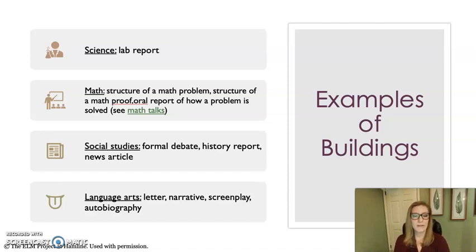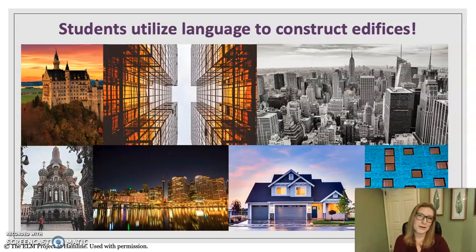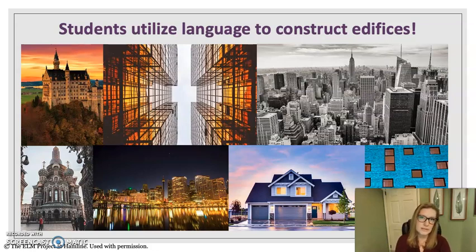These are all text types commonly found in these disciplines. It's critical that we not assume students know what these text types look like and how to build them — rather, we should offer explicit instruction and examples. Students utilize language to construct edifices. So many different buildings had people thinking of different things when putting together bricks and mortar. They thought about their end goal — were they building a home, a library, a castle? That's exactly what we hope students have in mind when building text types: choosing words and sentence forms relevant to those text types, so they can truly talk like historians, talk like biologists, or write like poets.